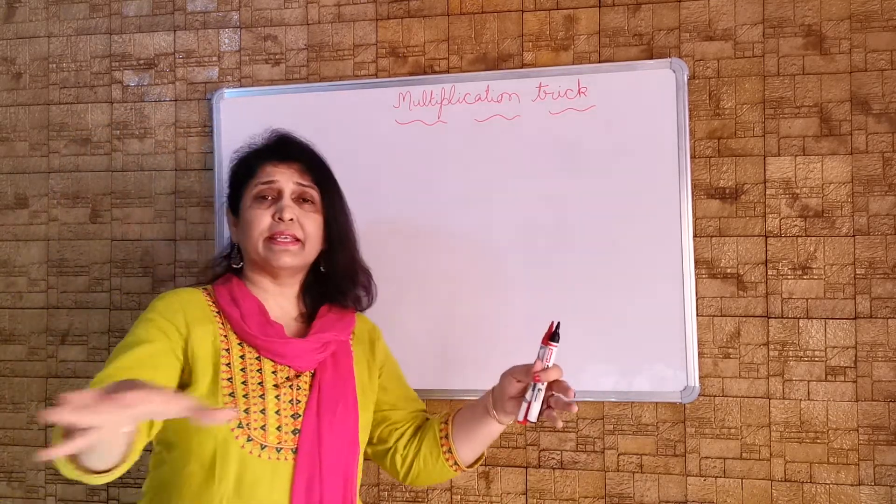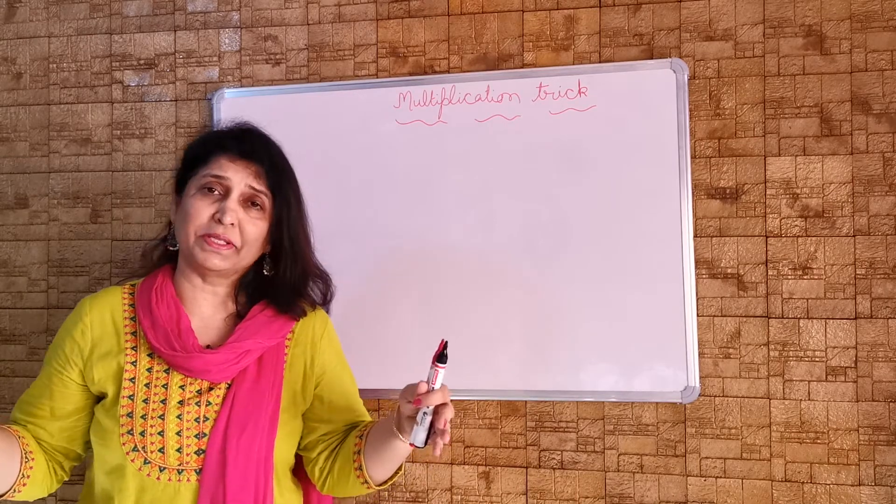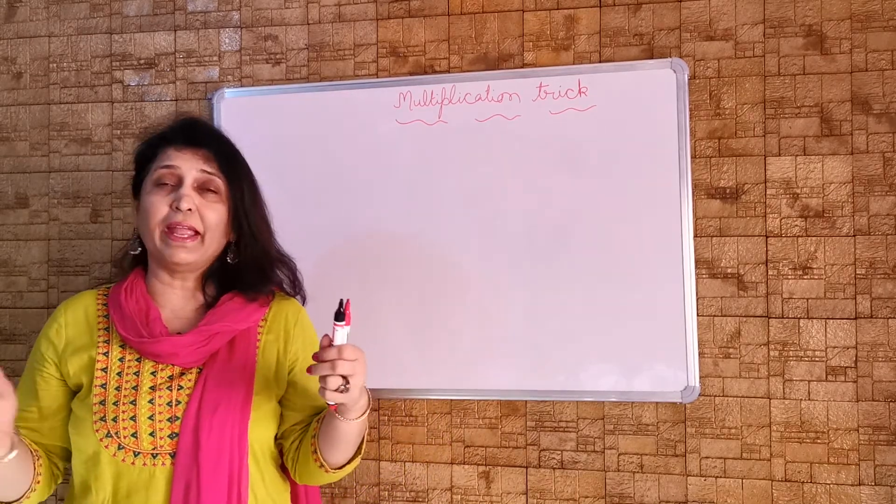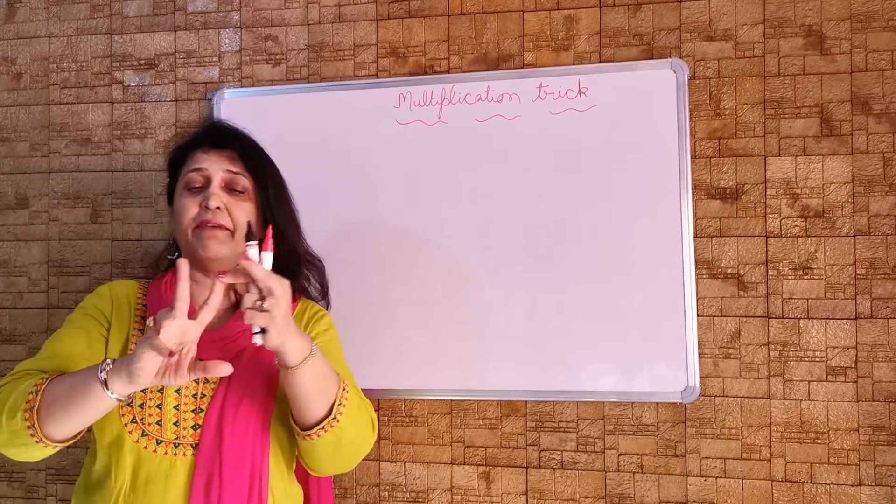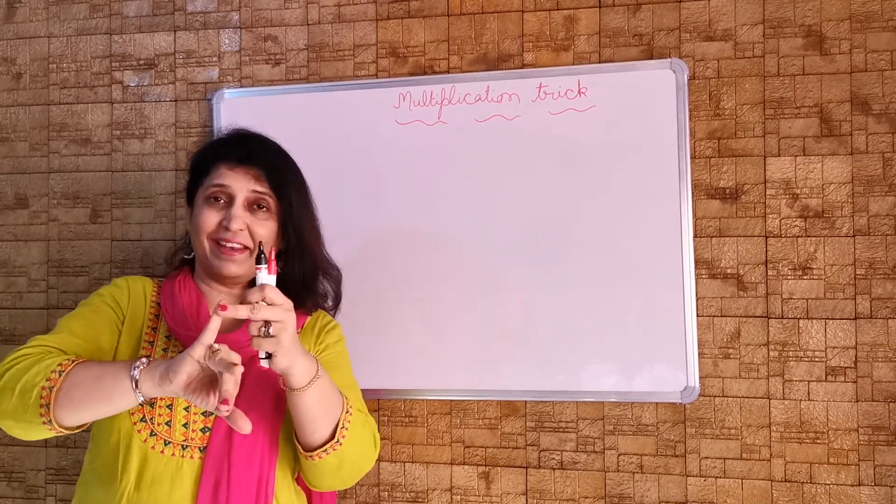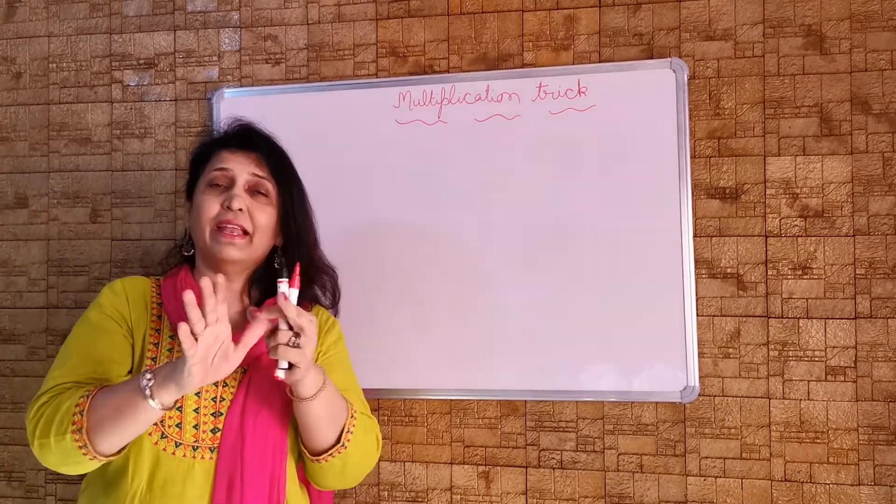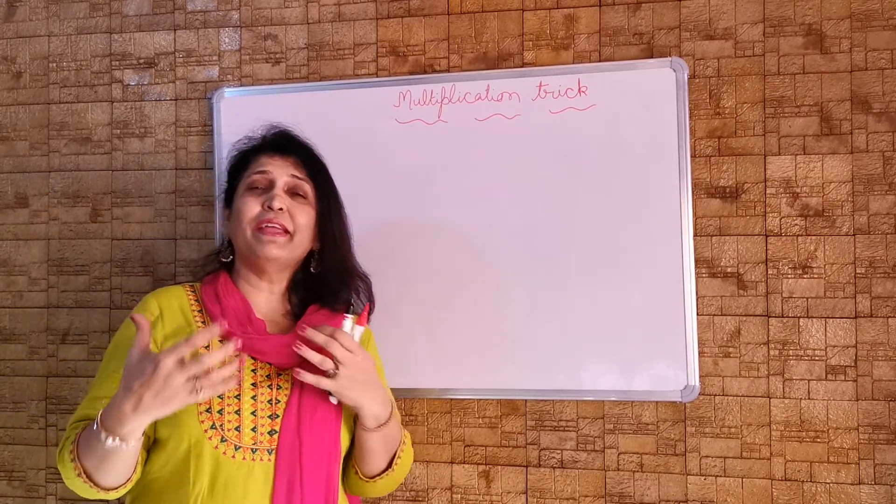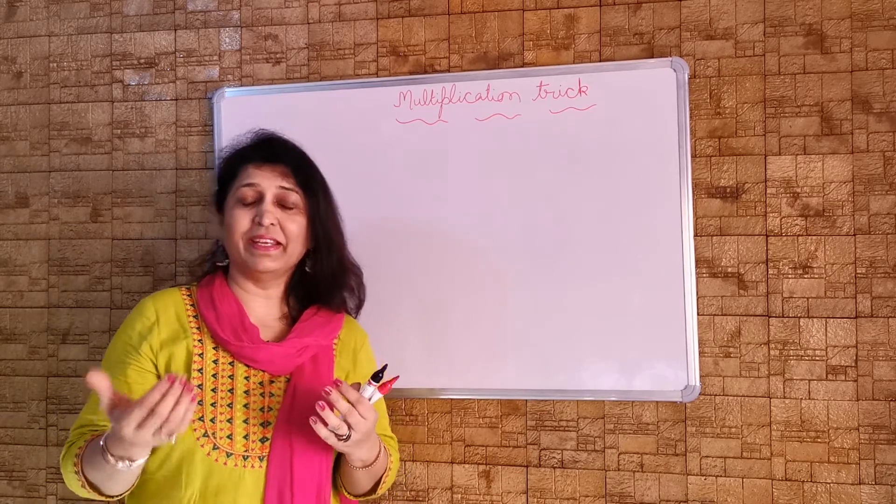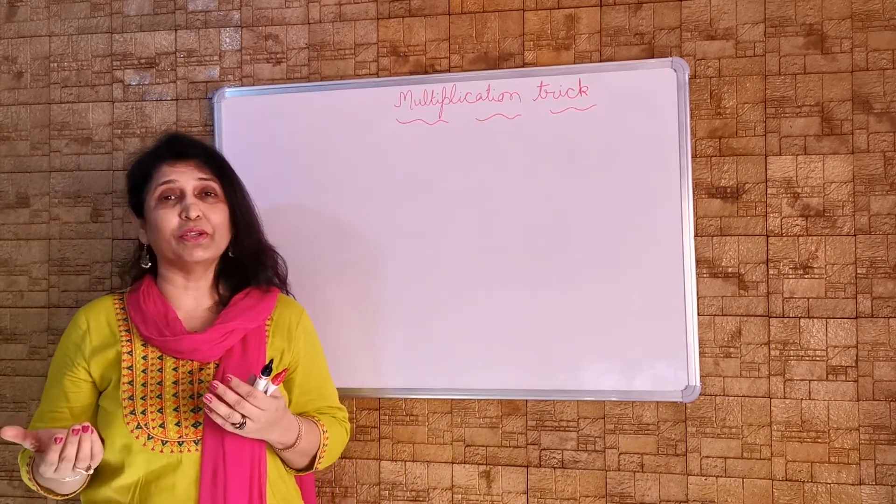When we were small kids and there are 7 kids and everybody has got 5 rupees. So we used to count like this: 5 rupees plus 5, 6, 7, 8, 9, 10. Then again 5, 11, 12, 13, 14, 15. You know it was a very interesting activity and we used to find it very easy also.